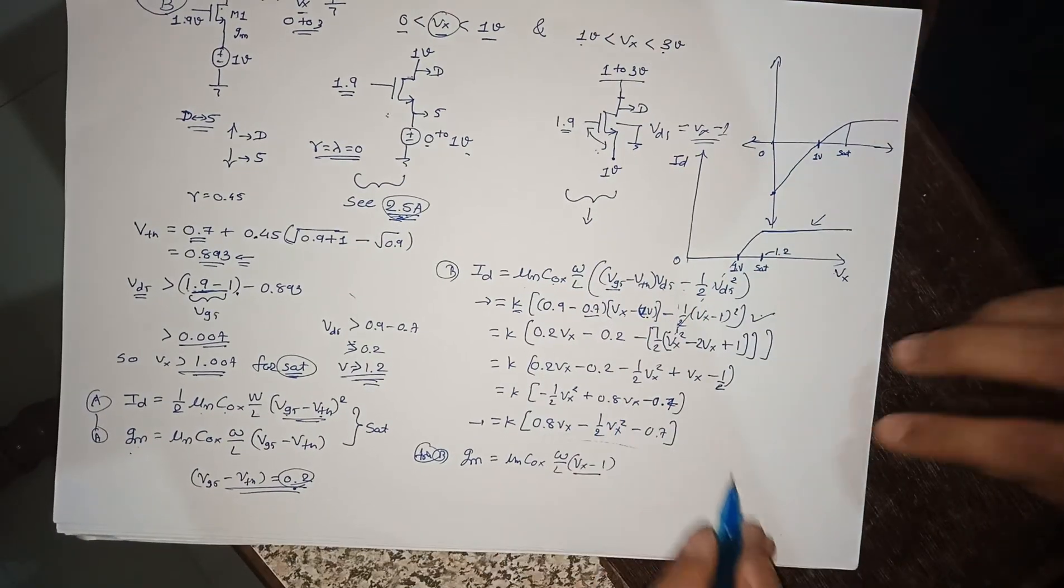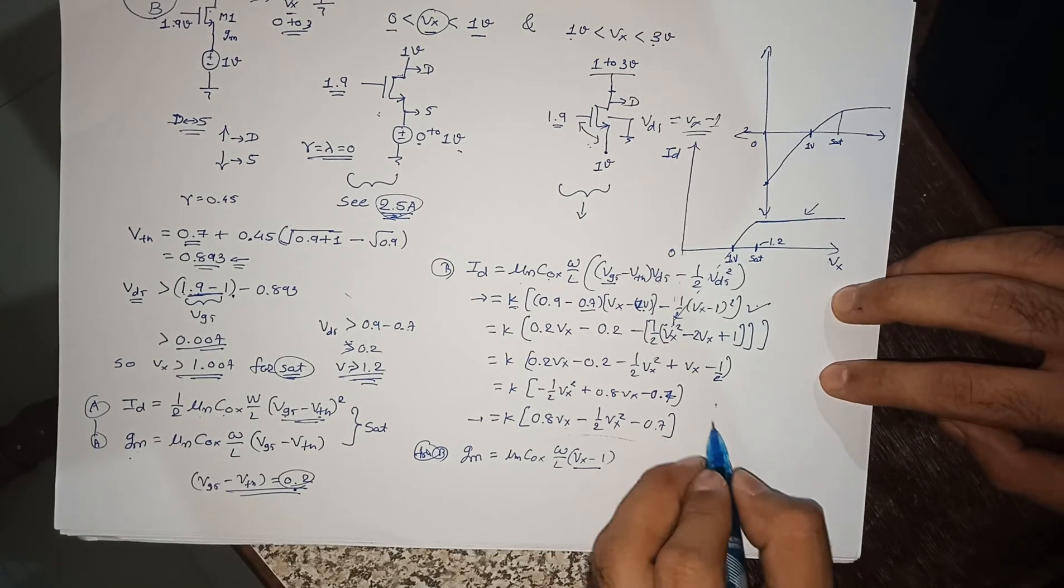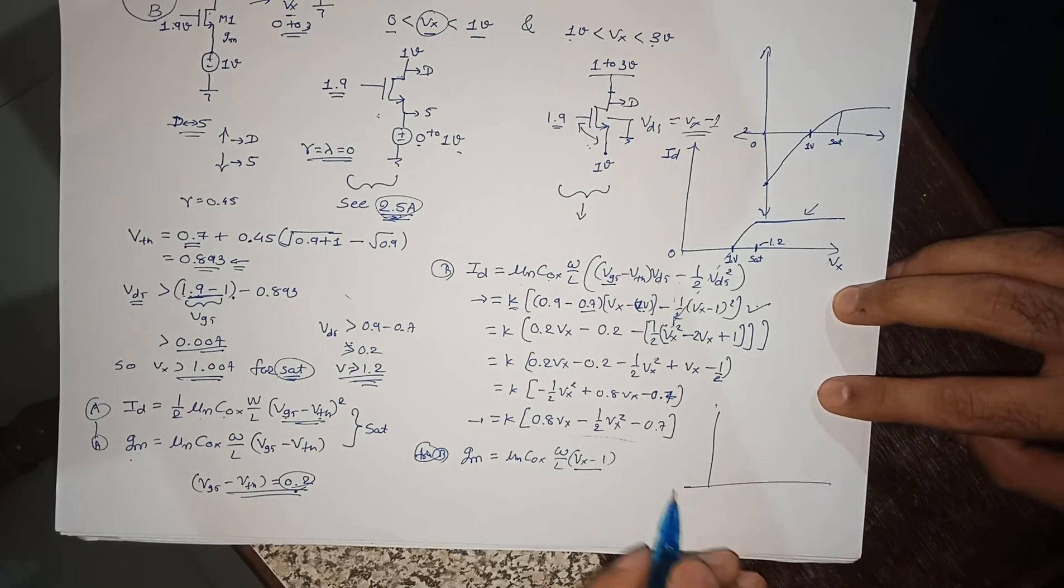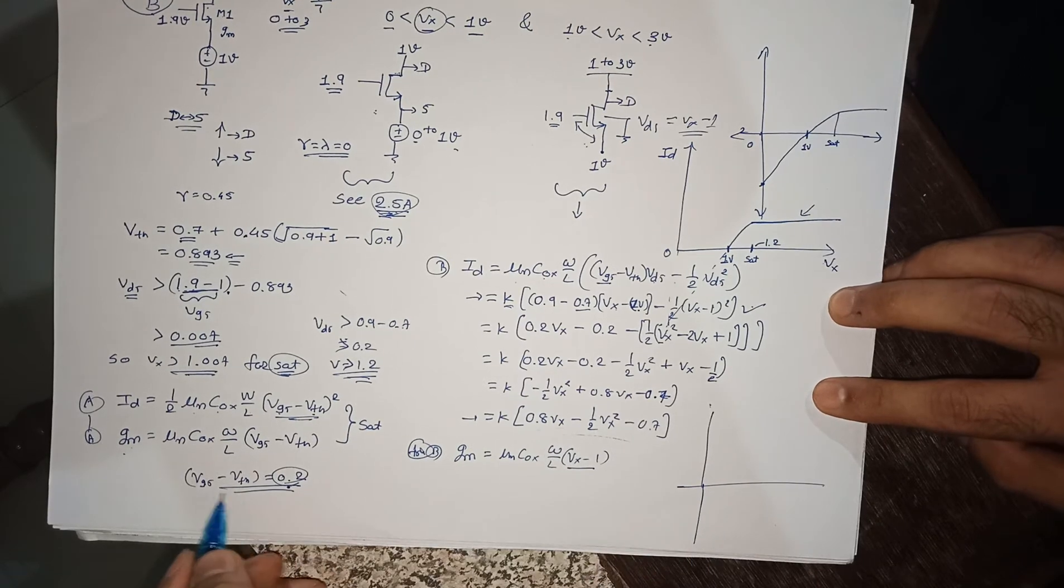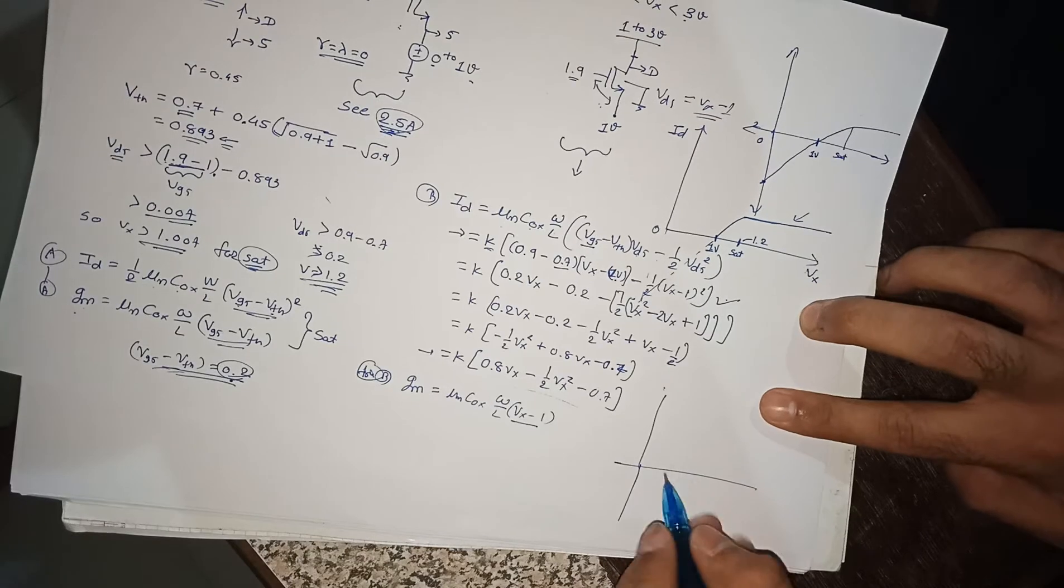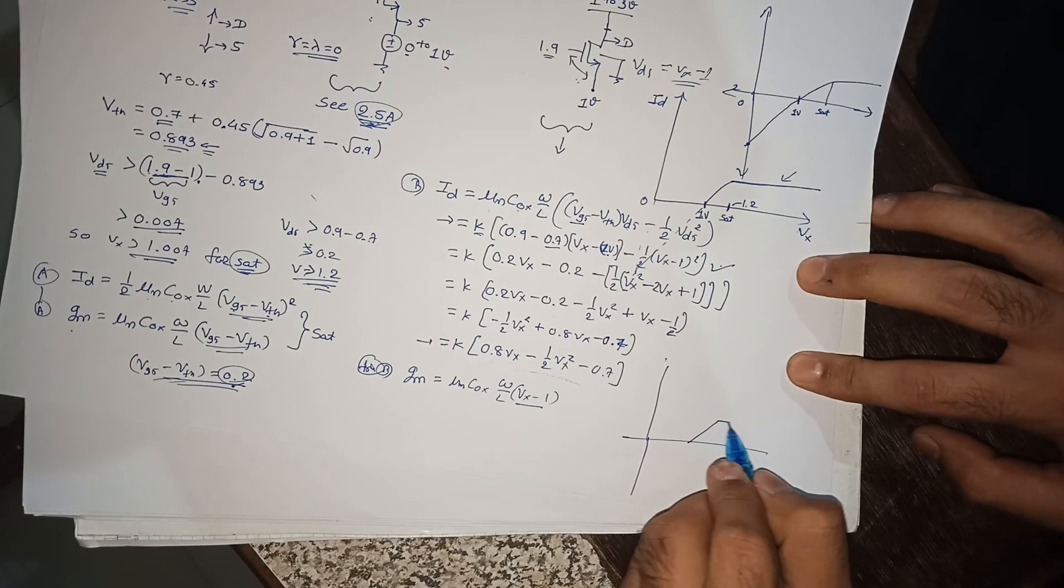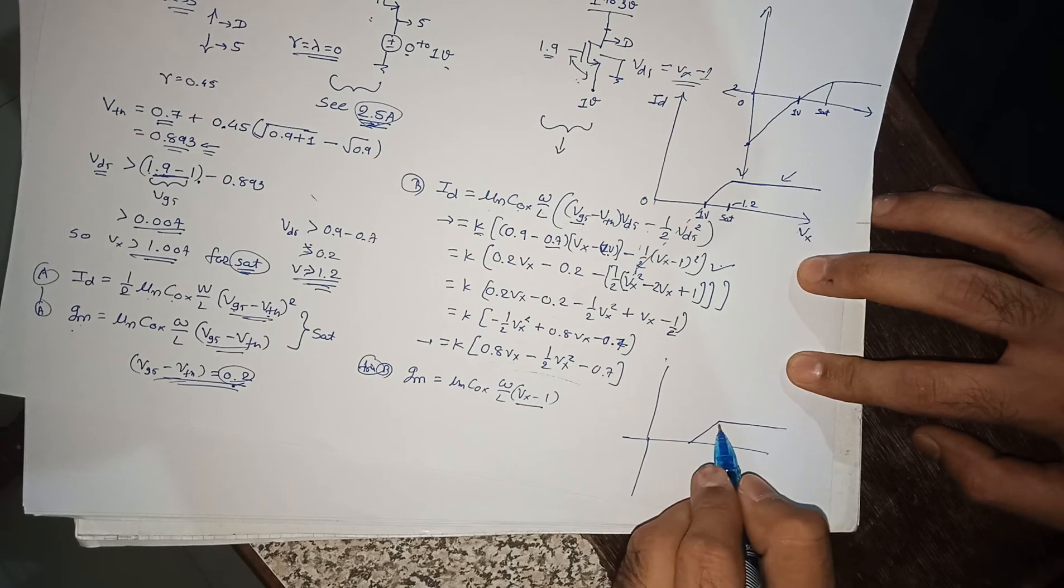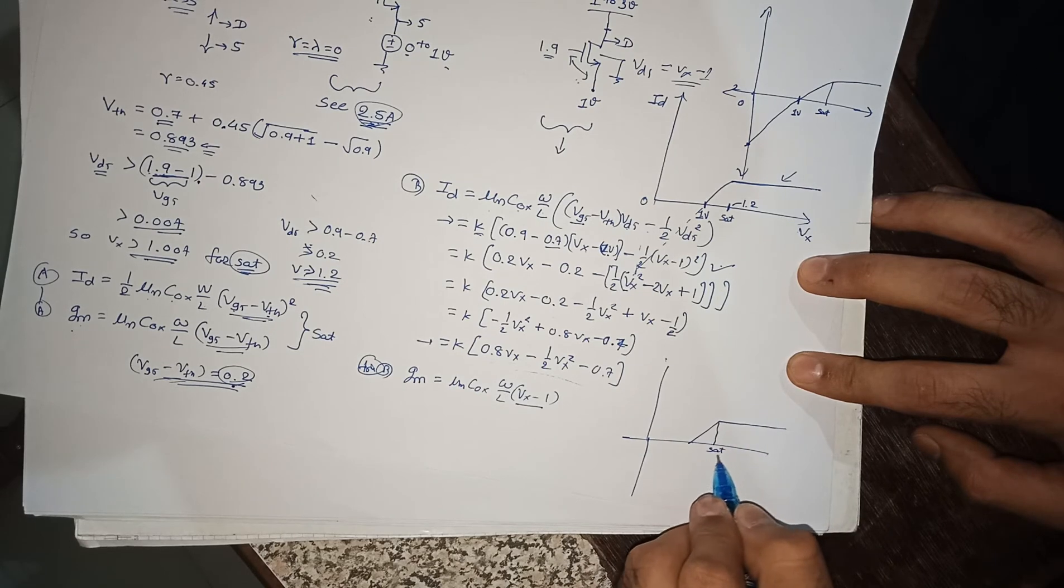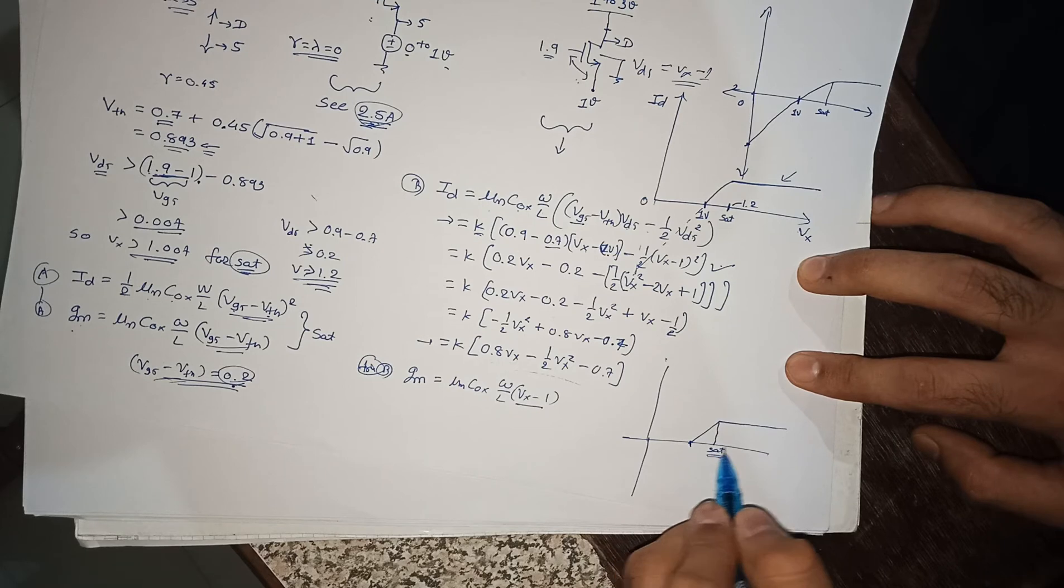How gm will look like. There is no square term here, so it will be a straight line. From the saturation point, it is like some constant value. I am stating saturation point again. If you are not considering both effects, second order effects, it will be 1.2, otherwise it will be 1.007.